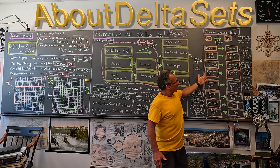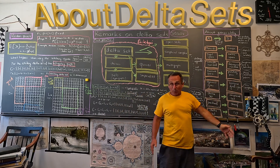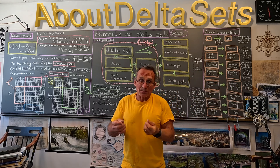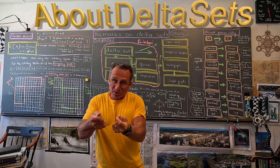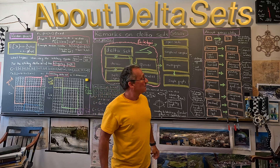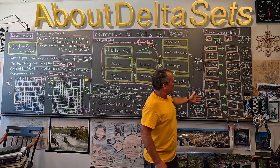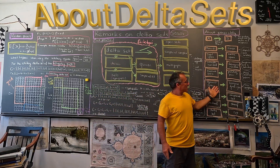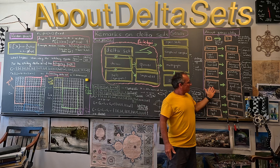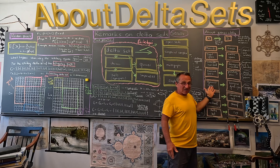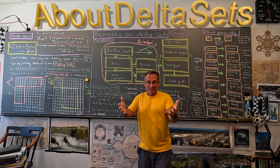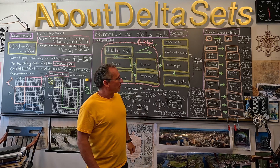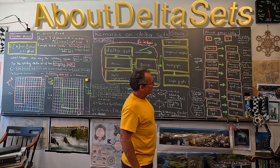A measure space is more general than a probability space. A probability space has the special property that the measure equals one. A dynamical system has fewer conditions, and a topological dynamical system additionally needs a topological space.